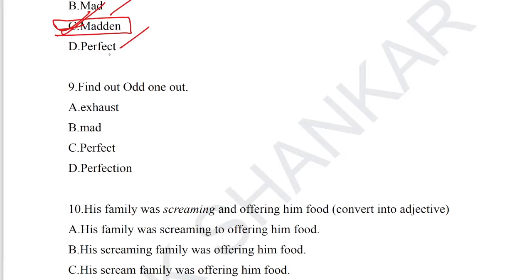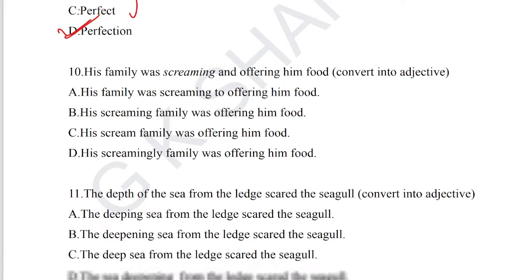Question number 9: find out the odd one out. Options: exhaust, mad, perfect, perfection. Perfection is a noun; the remaining — exhaust, mad, perfect — are adjectives. So perfection is the odd one out. Option D — perfection — is the correct answer for question number 9.